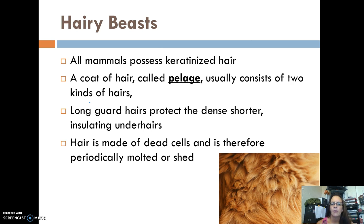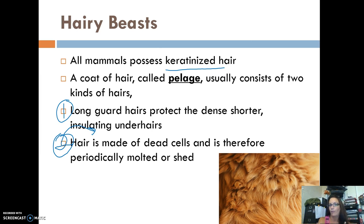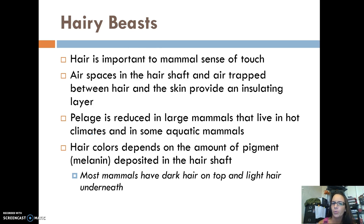When we talk about mammals, hair is one of the number-one things that comes to mind. All mammals have keratinized hair. A coat of hair, usually called pelage, has two kinds: long guard hairs that protect the dense, shorter underhairs, and those insulating underhairs. Hair is typically made of dead cells, which is why animals like dogs and cats shed, especially seasonally. Hair is also important to the mammal's sense of touch, and air spaces provide an insulating layer between the hair and skin. Hair is reduced in large mammals that live in hot climates, and aquatic animals like whales don't really have hair at all.